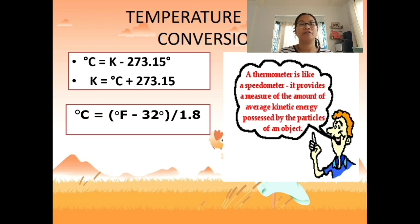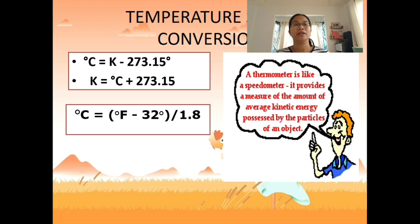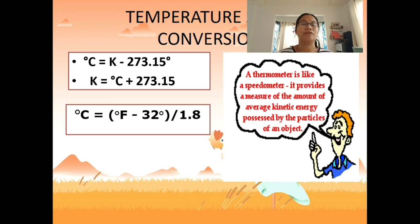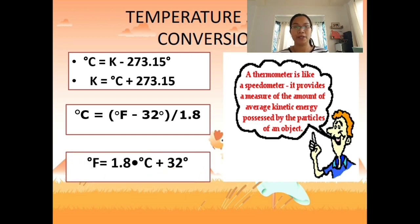For conversions: if you are given Kelvin and want degrees Celsius, use °C = K − 273.15. If you want Kelvin given degrees Celsius, add 273.15. To convert from degrees Fahrenheit to degrees Celsius, use: °C = (°F − 32) ÷ 1.8.